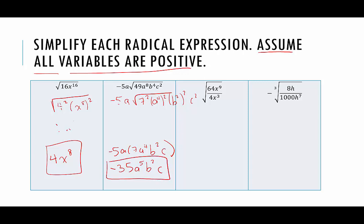Next, we see a fraction. It looks like we can simplify it because 4 goes into 64. So we can rewrite this as the square root of 16 — since 64 divided by 4 is 16 — times x to the 6th, since x to the 9th divided by x to the 3rd is x to the 6th. Rewriting as a perfect square: 4 squared times x cubed squared. That gives us 4x cubed as our final answer. If we didn't get to assume variables are positive, x cubed would need to go in absolute value bars.